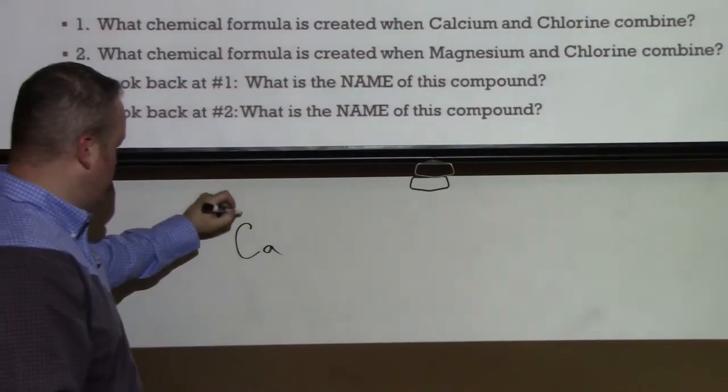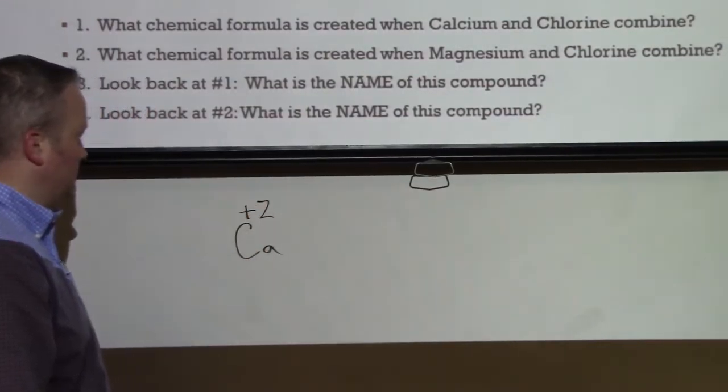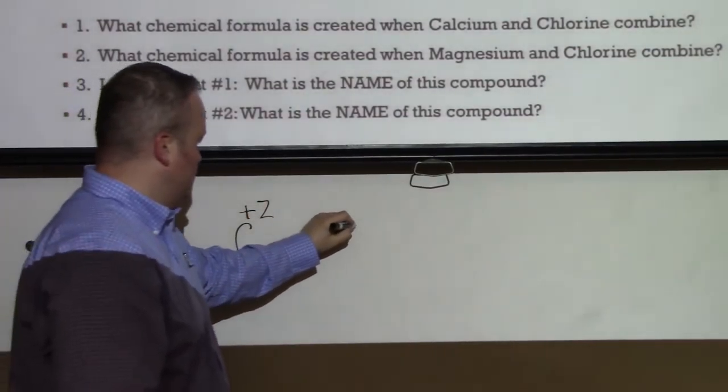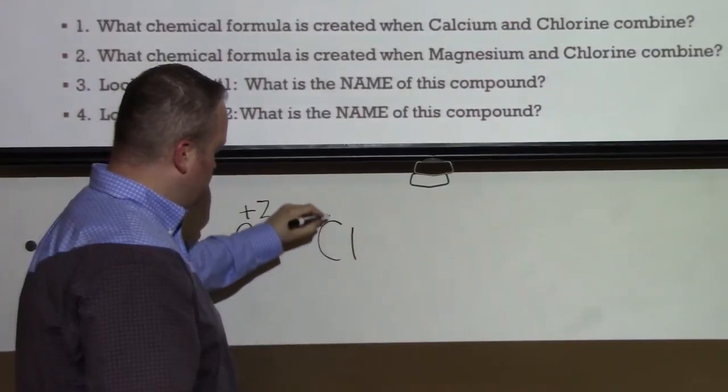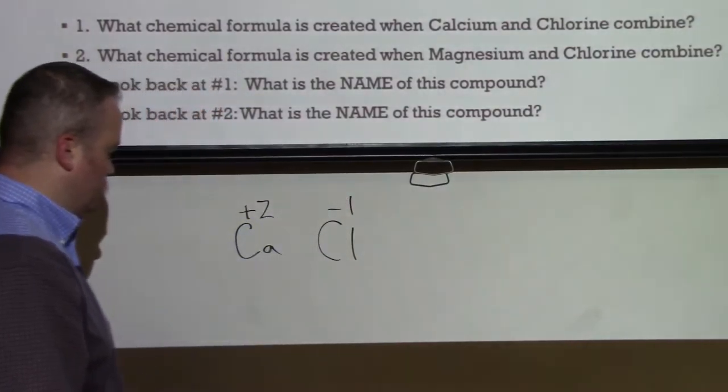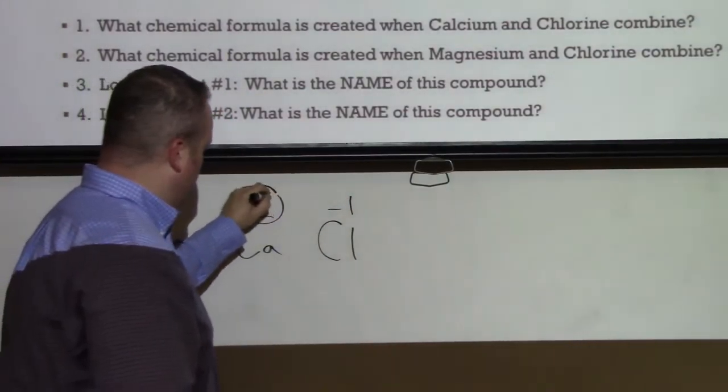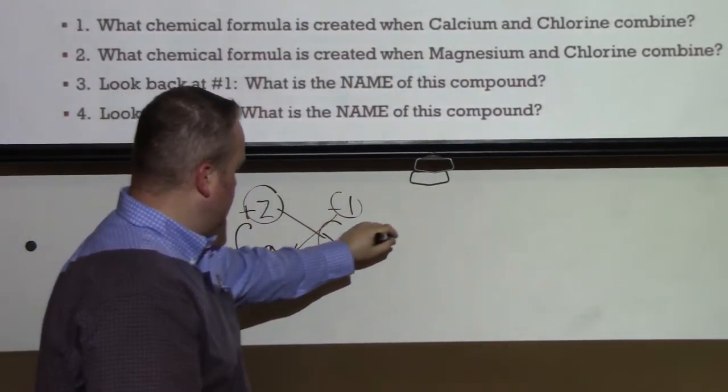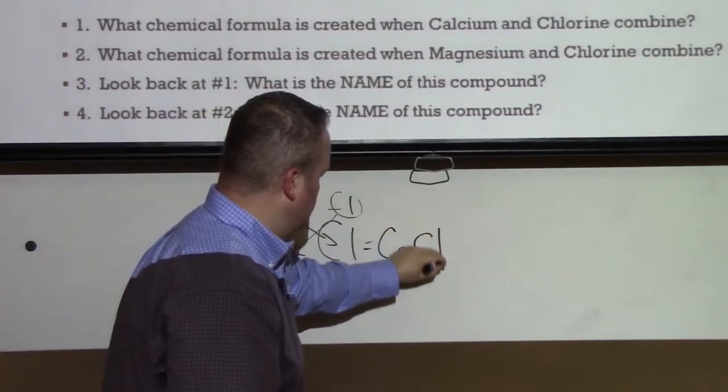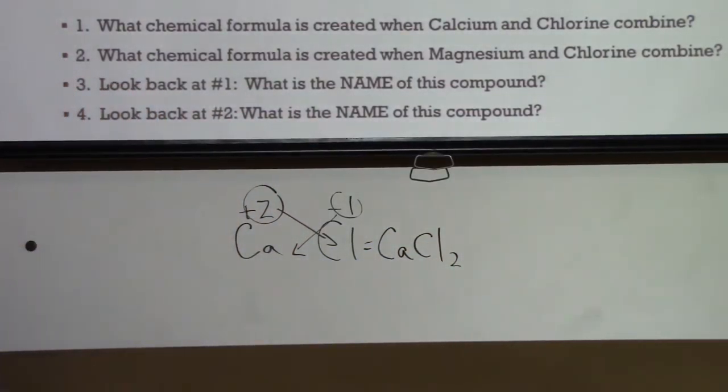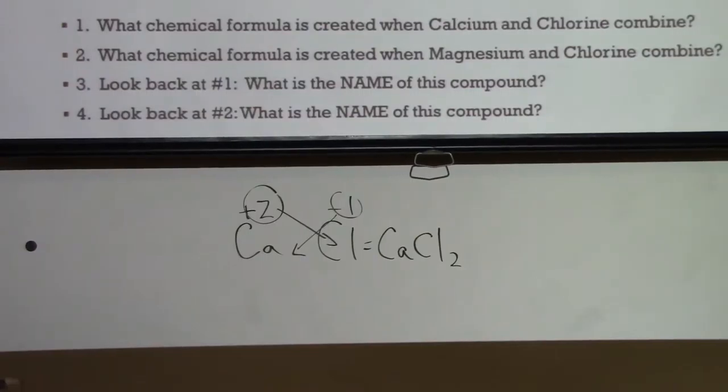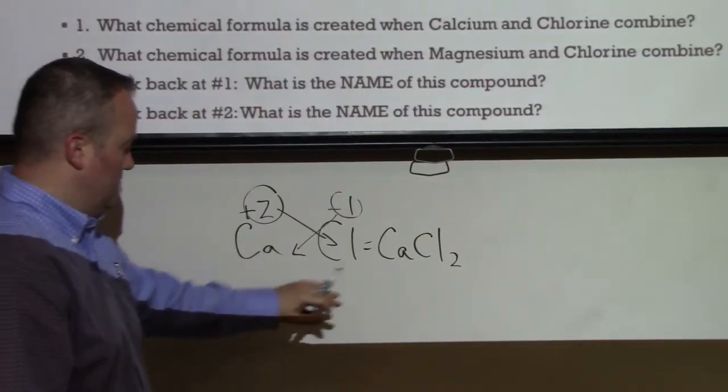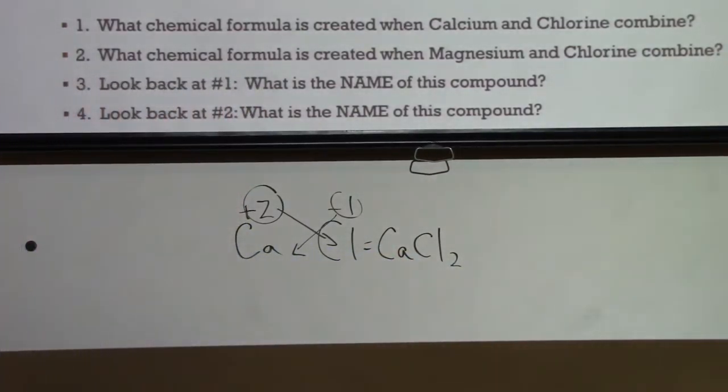So for calcium and chlorine, remember that calcium is in group two, so it's positive, the oxidation number is going to be a positive two. Chlorine is in group 17, so it needs one more. It's a negative one for this oxidation number. The numbers will cross, and that will give us CaCl2.